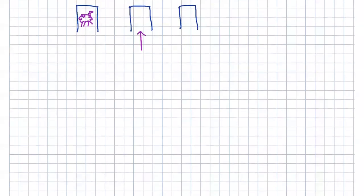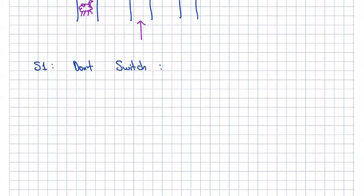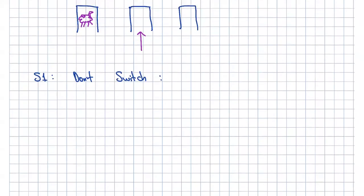It's surprising to quite a few people that it turns out you always want to switch. So let me give you an analysis as to why. We have two strategies. Strategy one is to stick to the same door — don't switch. What's the probability of winning? You have a one-third chance if you randomly picked those doors, so the probability is one-third. Now let's look at the second strategy: always switch.